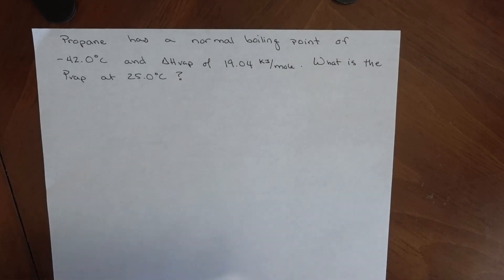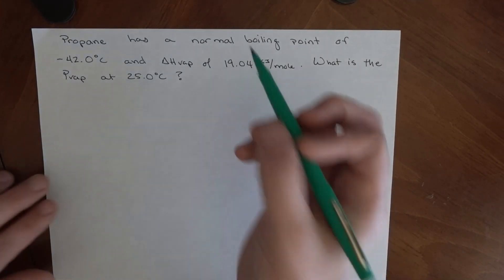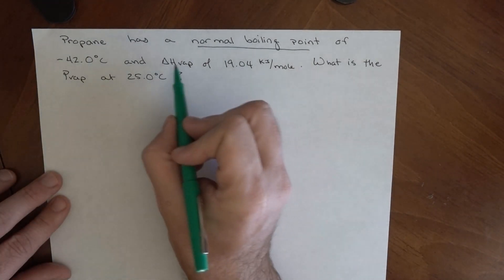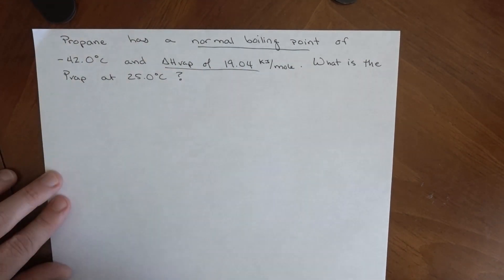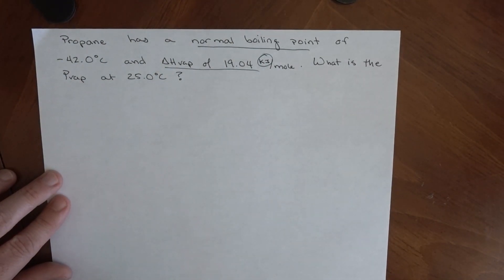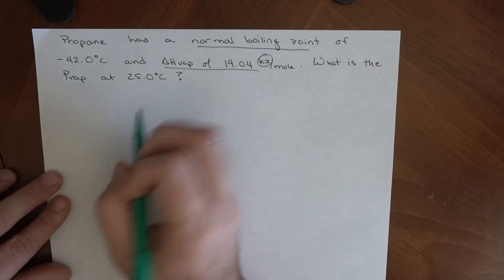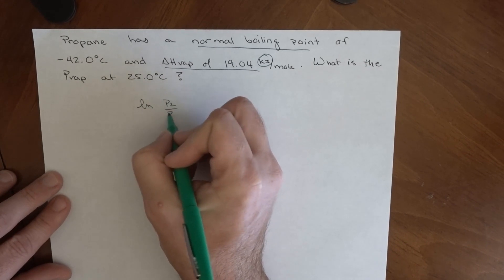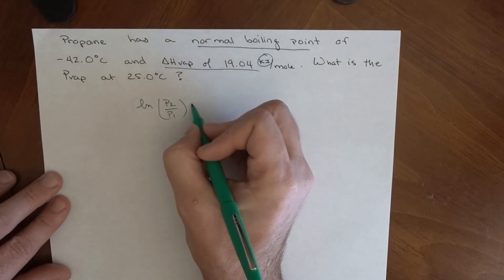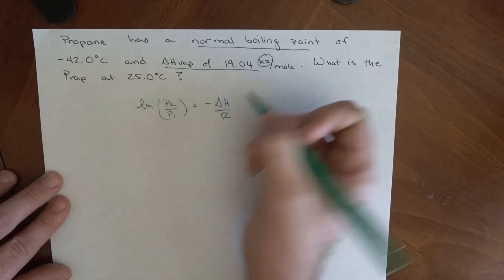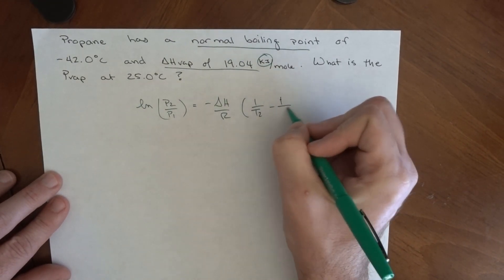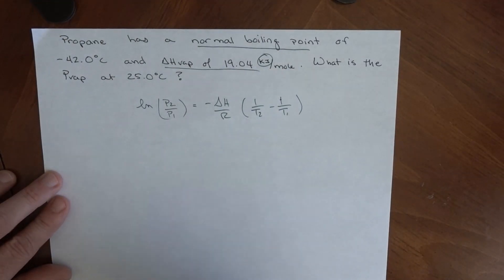Propane has a normal boiling point of -42.0°C and a ΔHvap of 19.04 kilojoules per mole. What is the vapor pressure at 25°C? The equation we're going to use is the two-point version: ln(P2/P1) = -ΔH/R × (1/T2 - 1/T1). There's our equation, pretty straightforward.